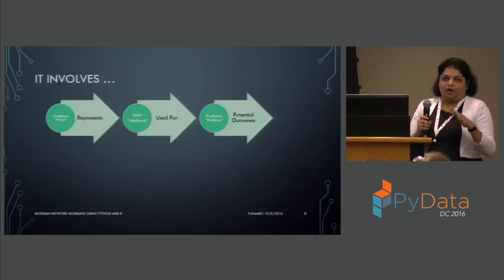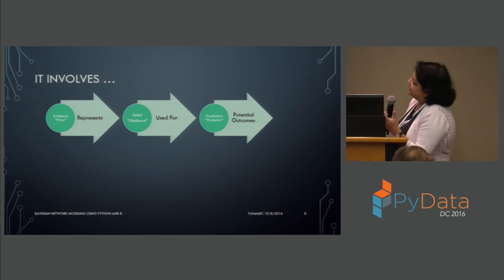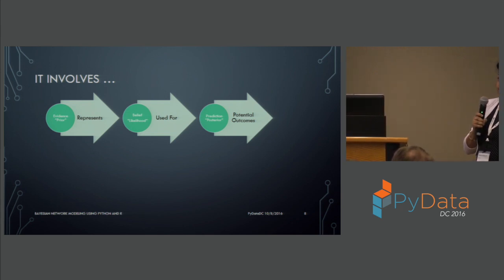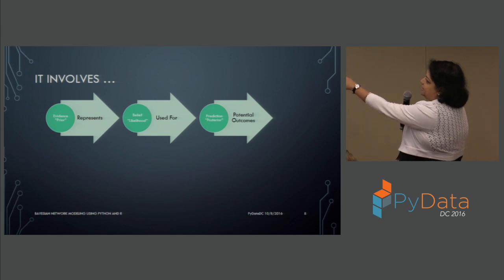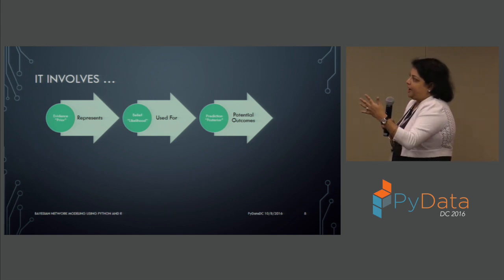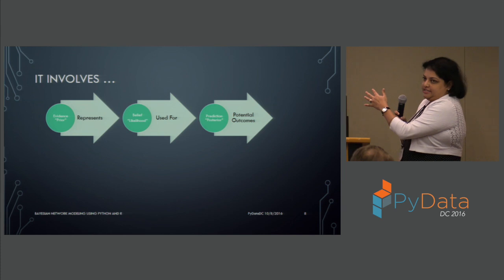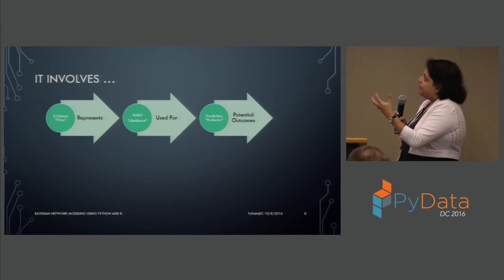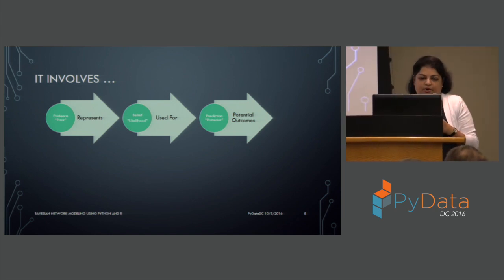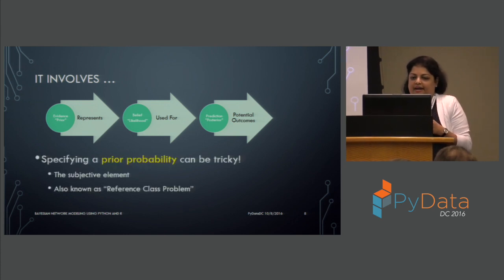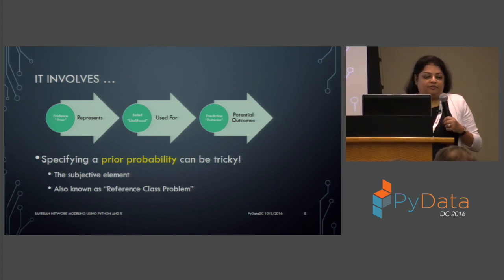Putting this in a more graphical format: your evidence — also called the prior — represents the belief or likelihood which is used for prediction, producing a posterior probability that represents your potential outcomes. When I was talking about the Air France example, there were certain prior and posterior terms mentioned. Hopefully this chart gives you clarity on what is prior, what is likelihood, and what is posterior, because these three terms keep coming up often when working with Bayesian networks.